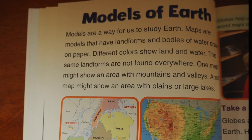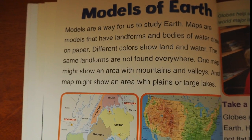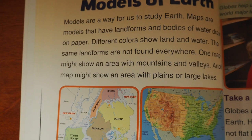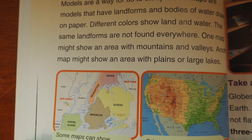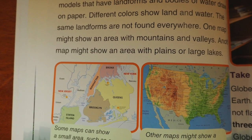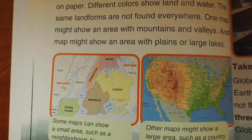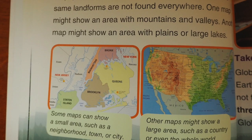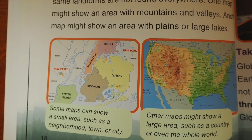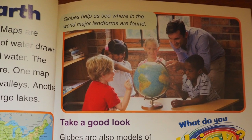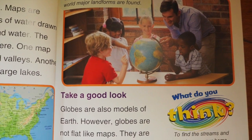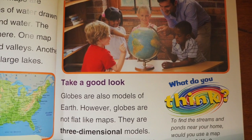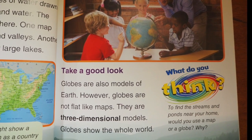Maps are models that have landforms and bodies of water drawn on paper. Different colors show land and water. The same landforms are not found everywhere — one map might show an area with mountains and valleys, while another might show plains or large lakes. Globes are also models of Earth, but unlike flat maps, they are three-dimensional models that show the whole world.